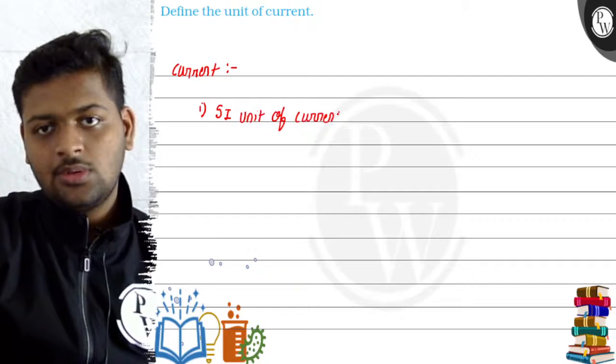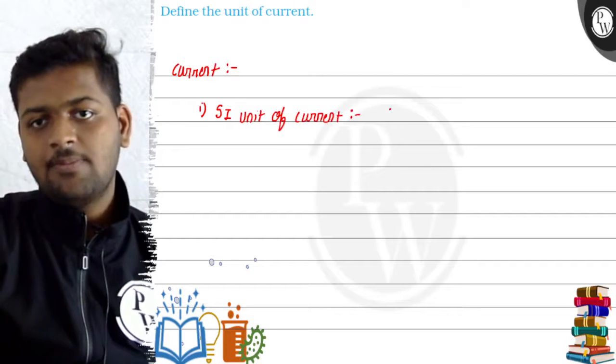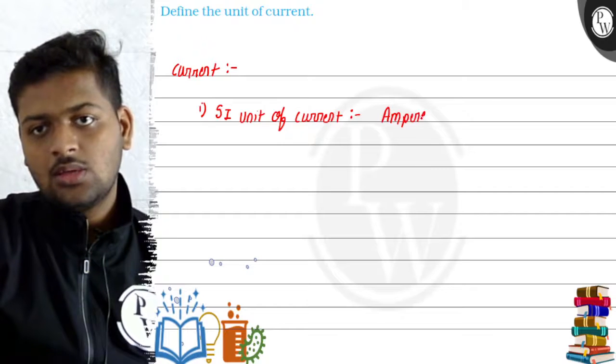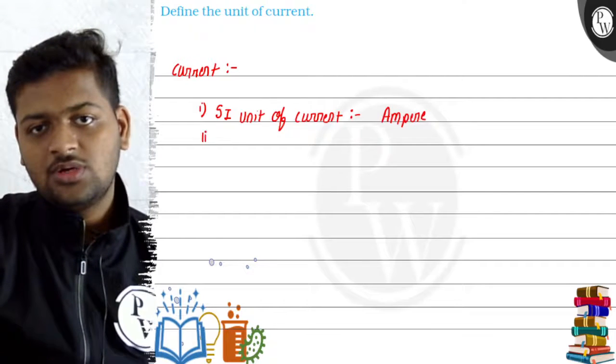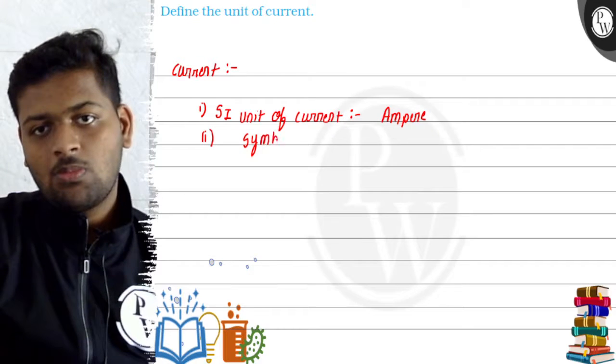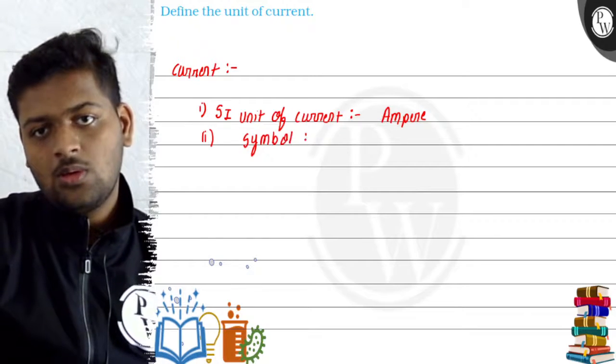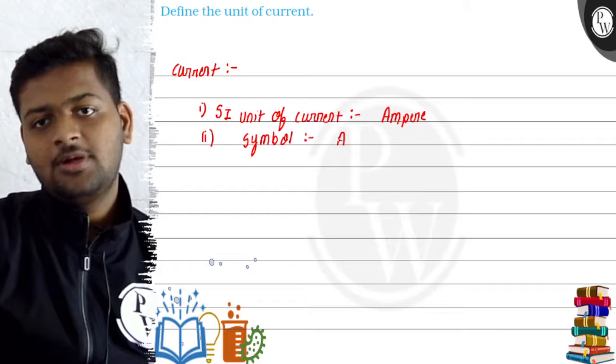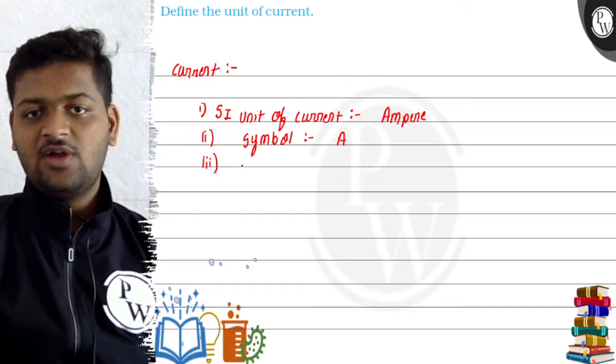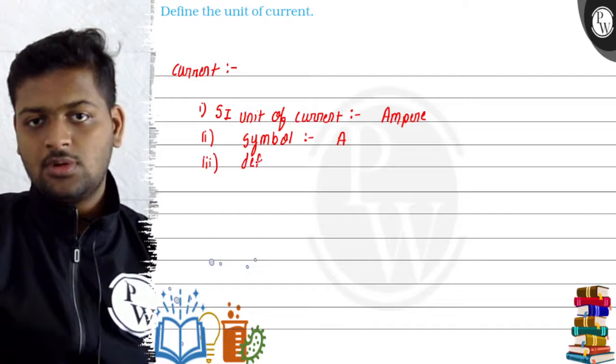Current is amperes. It is called ampere. Now, the symbol of SI unit is capital A. Now third, we will try to define the definition.